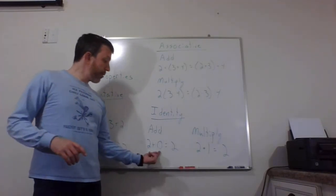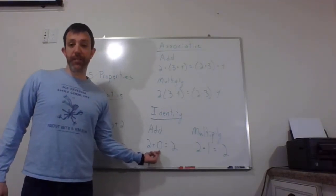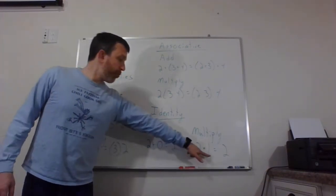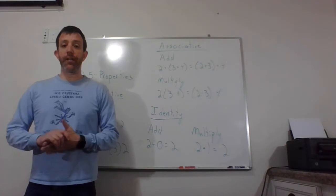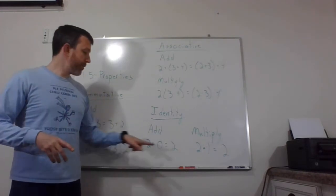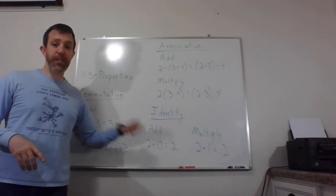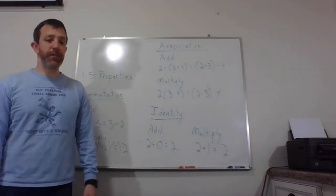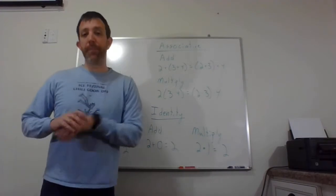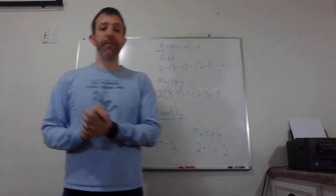So zero is called the additive identity because it doesn't change anything. And one is called the multiplicative identity because it doesn't change anything. Zero is the additive identity. It doesn't change anything under addition. One is the multiplicative identity. It doesn't change anything under multiplication. And those are our first three properties. We're going to look at two more.